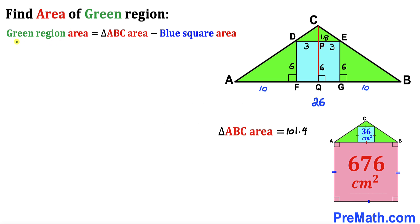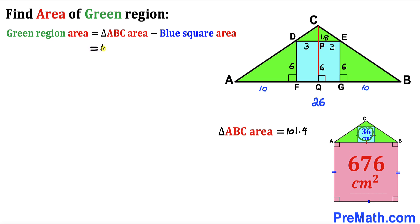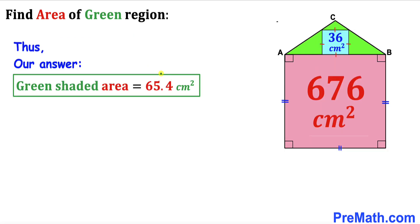For the final step, the area of the green shaded region equals the area of triangle ABC minus the area of the blue square: 101.4 − 36 = 65.4 cm². So the area of the green shaded region is 65.4 cm². That's our final answer.